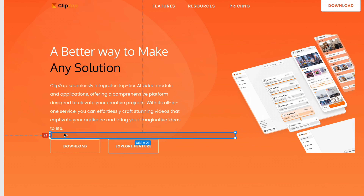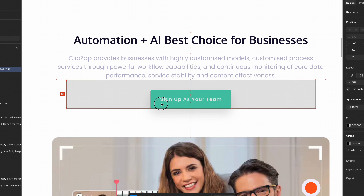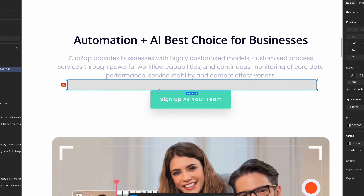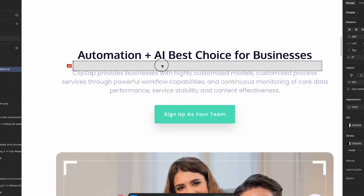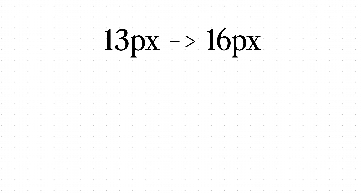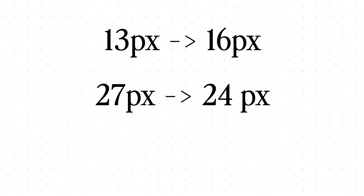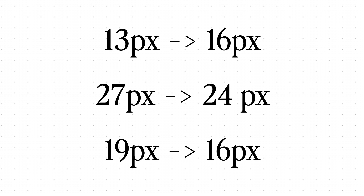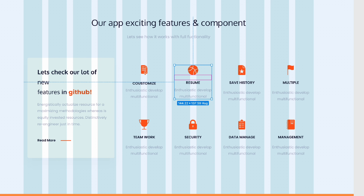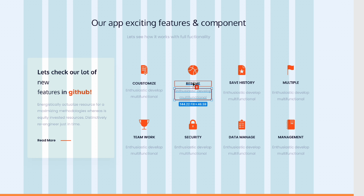For the layout, this is where cheap websites really expose themselves. If you zoom in, the spacing is completely random — 13 pixels here, 27 pixels there, 19 pixels between sections — basically numbers picked with vibes, not intention. A super easy fix is to use an 8-point grid: every spacing value is a multiple of 8. So instead of 13, use 16. Instead of 27, use 24. Instead of 19, use 16. Once you do that, the whole thing instantly feels calmer and more premium.